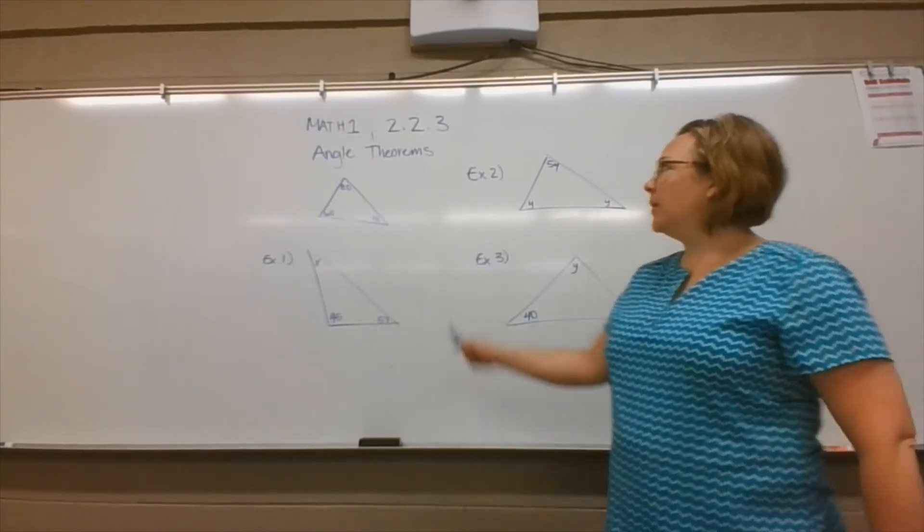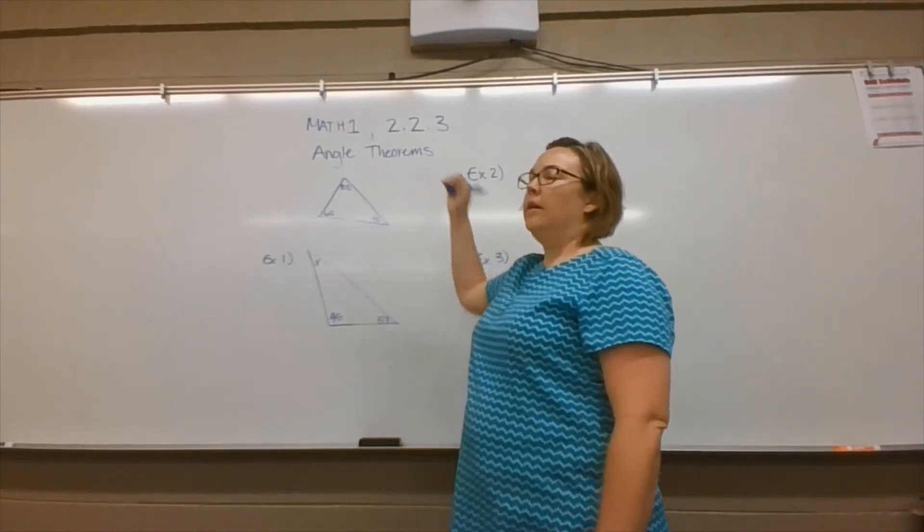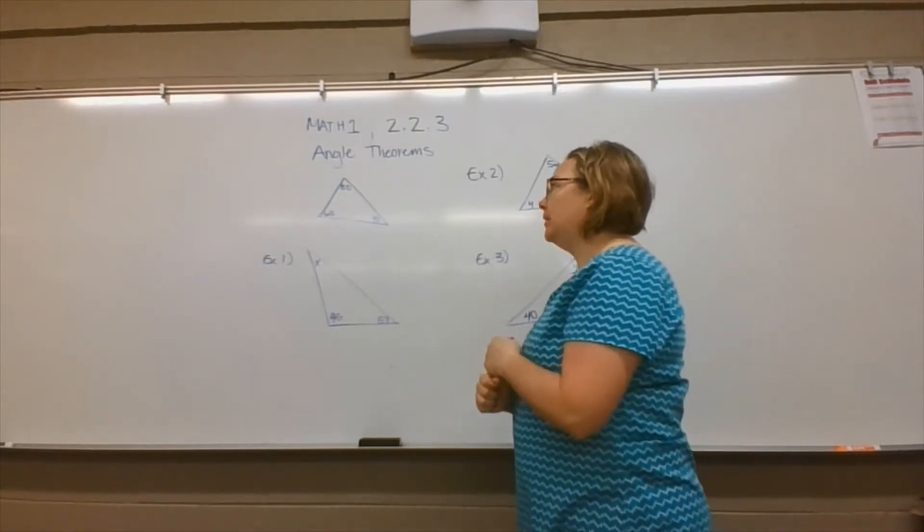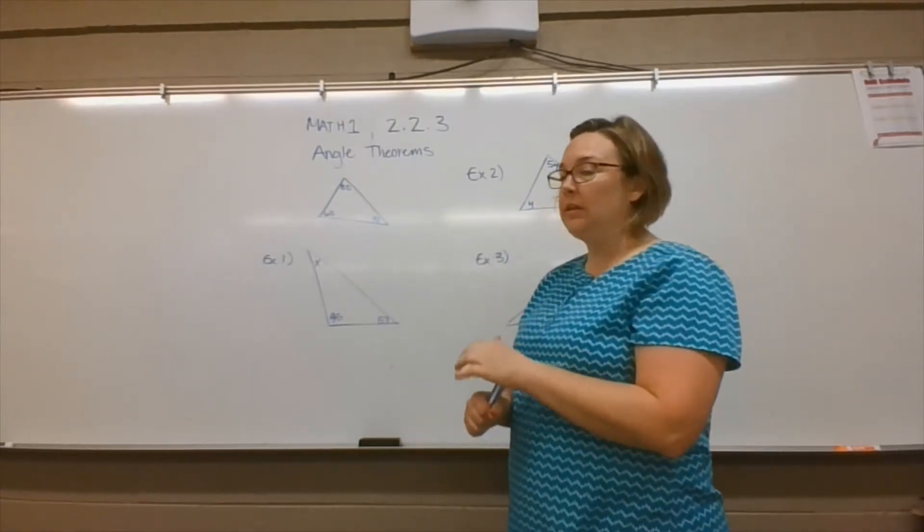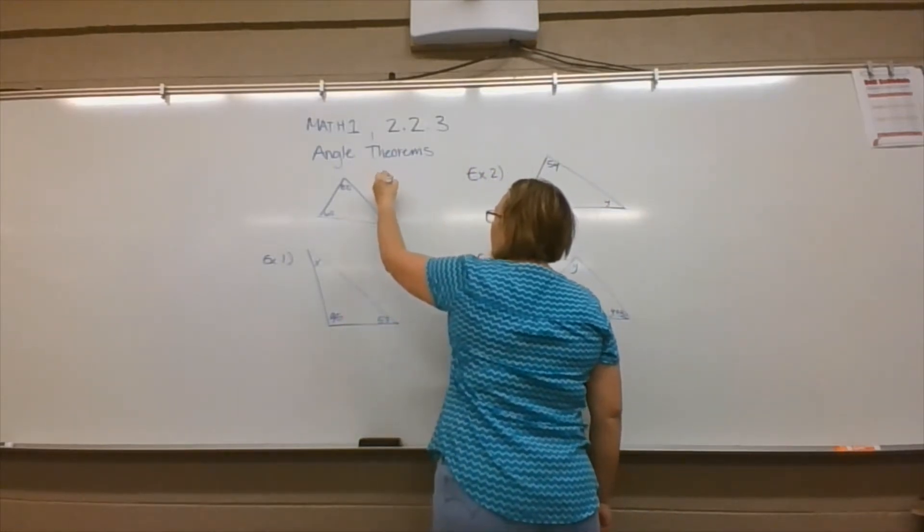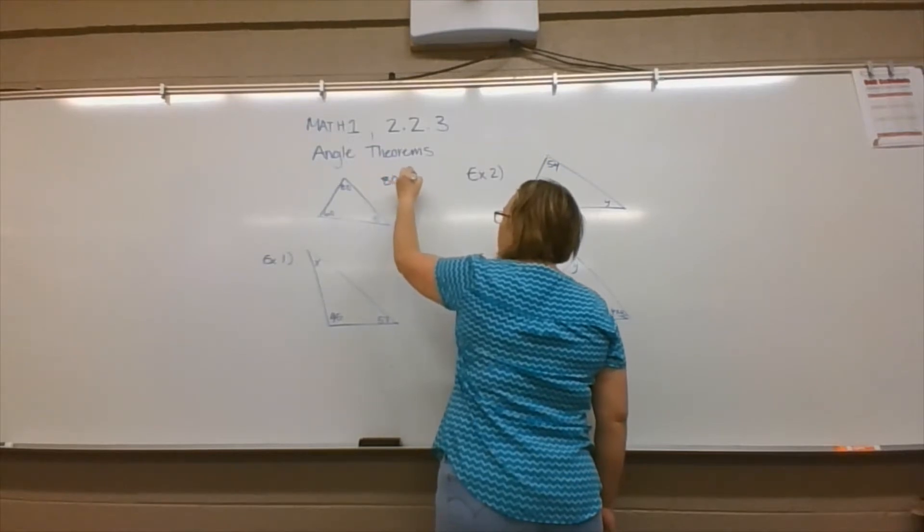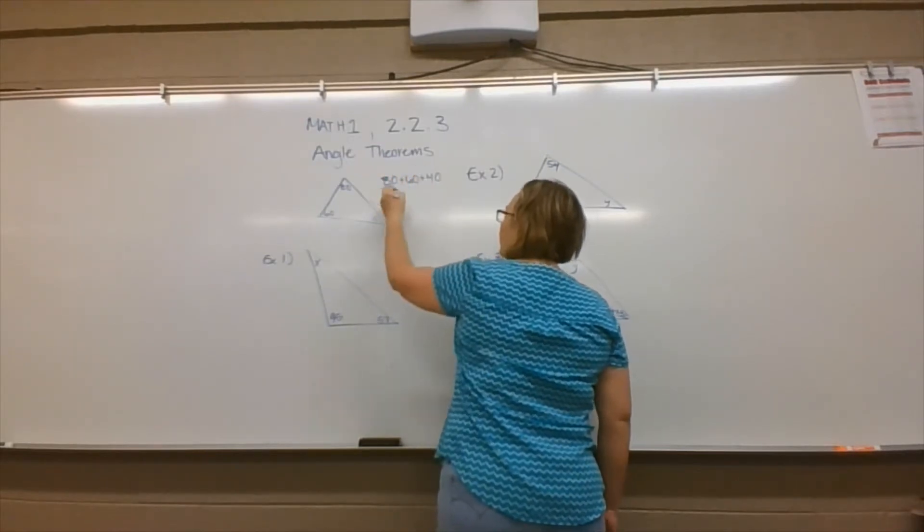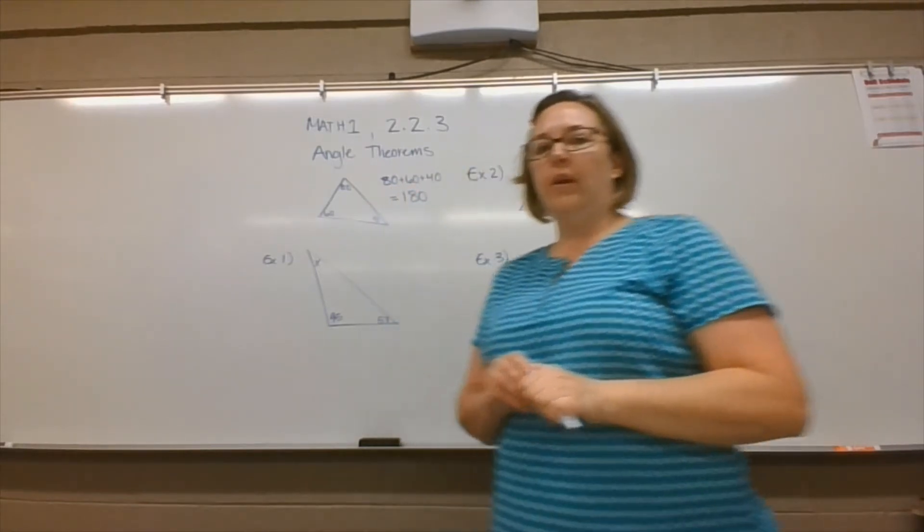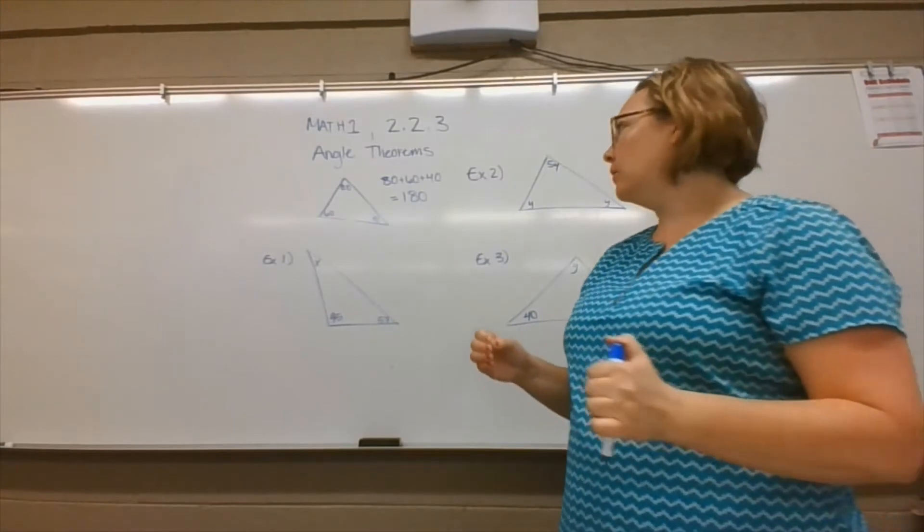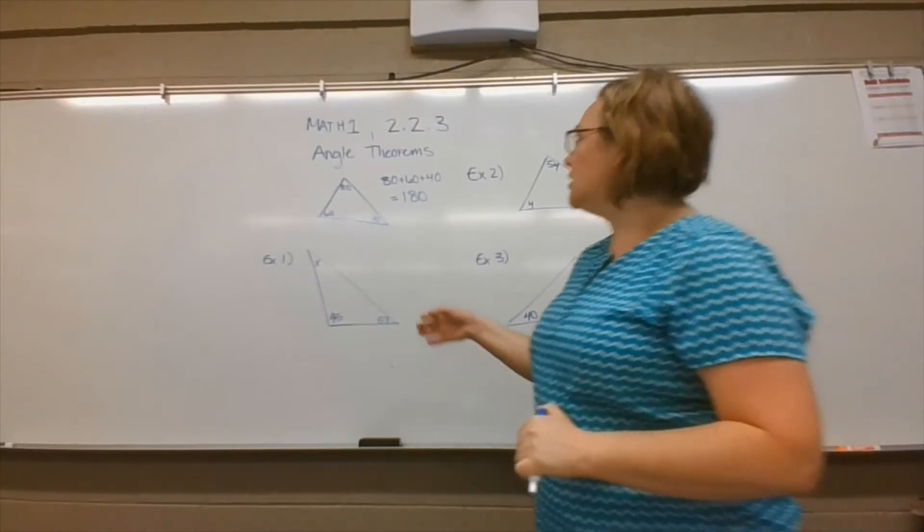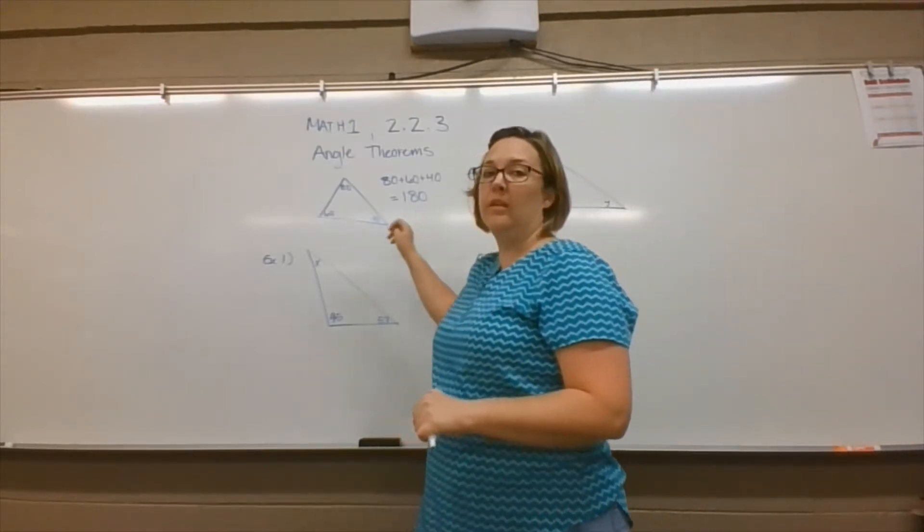This video is about angle theorems. It's important to know that all three angles in a triangle will add to 180 degrees. For example, in this triangle, if we add all of these angles together, we have 80 plus 60 plus 40, and that sum is 180. So all the angles, no matter the triangle, all three angles will add to 180 degrees. That's the first thing to know when working with different angle theorems.